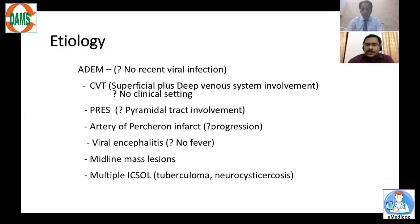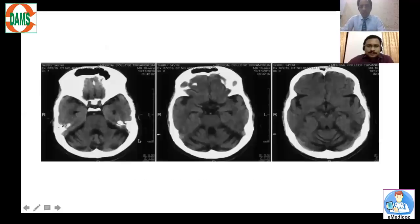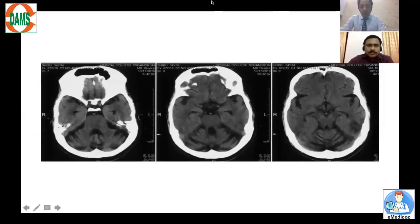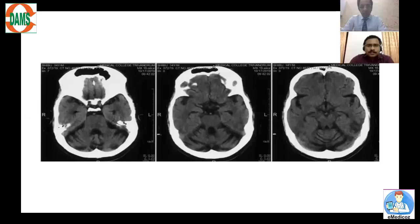Moving to the non-contrast CT findings. Going from below upwards, the first outstanding feature is that the cerebellar folia appear much more prominent than in a normal patient. Comparing cerebellar foliar prominence with the cerebral sulci, there is out-of-proportion atrophy — an element of cerebellar atrophy that was unsuspected on clinical details. We have to think of causes like long-term alcohol intake.